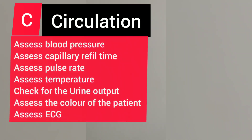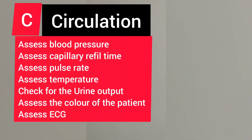C stands for Circulation. You assess the patient's blood pressure, pulse rate, capillary refill time, and general color of the patient. For circulation, also assess temperature and urine output — the patient should be making at least 25 to 30 mls per kg per hour. Check blood pressure; at minimum, the systolic blood pressure should be between 100 to 140 millimeters of mercury. Also monitor the ECG.